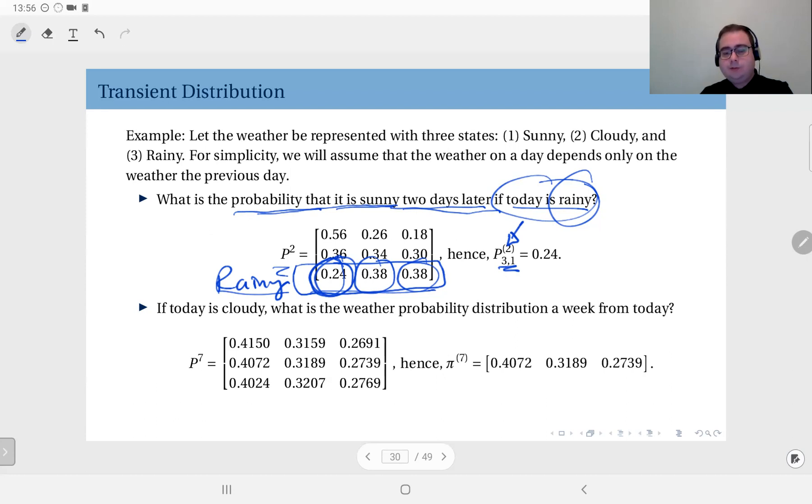Alternatively, you can express this probability as, you can derive this distribution by π₀ times P to the power two, where π₀ here, if you know today is rainy, this will be equal to [0, 0, 1]. Now, you know that you start from rainy. So, the probability that the initial state is sunny is 0, the initial state is cloudy is 0, and the probability that the initial state is rainy is 1, because that information is given to you. If you do this, this will be a row vector, which is exactly this.